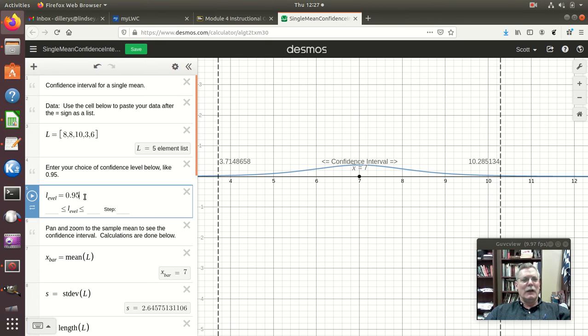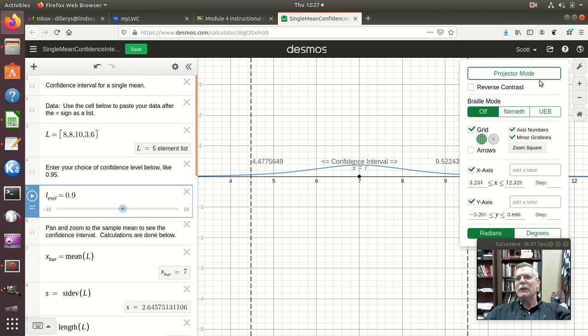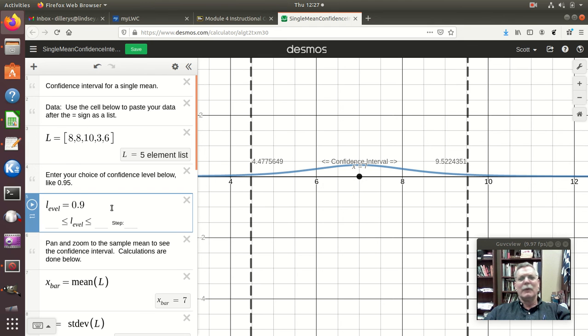And I can change my confidence level here. So instead of a 95% confidence level, I could see that, right, if I want to be less confident, I will get a smaller interval, so 0.9, it made a little smaller. You see now I'm in below 10. Actually, you could see all this better if I went to projector mode, I guess. And so going to a 95 from a 90 to a 95, the 95, if I want to be more confident, I need to include more possible values and see it gets wider.